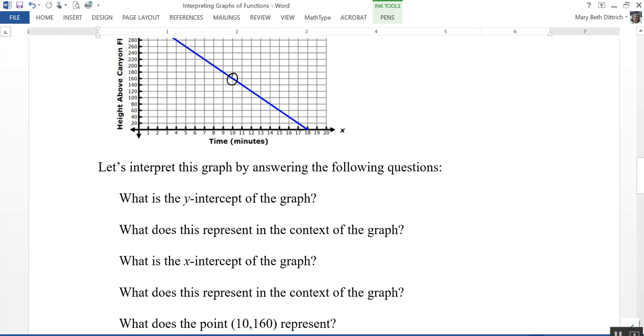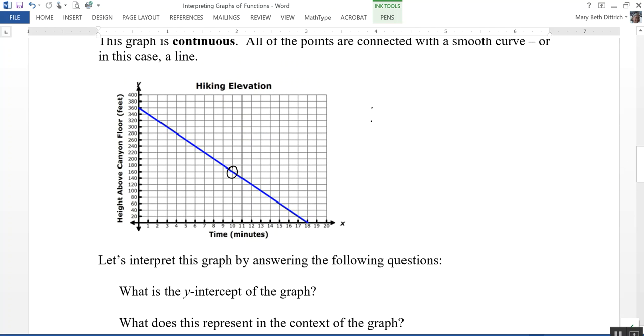And what is the slope of this? I could actually, probably the easiest way to do that is to pick two points. My y-intercept was the point, what was my y-intercept? My y-intercept was the point 0, 360. And my x-intercept was the point 18 comma 0. So I can do 360 minus 0 over 0 minus 18, or 360 over negative 18, or negative 20.